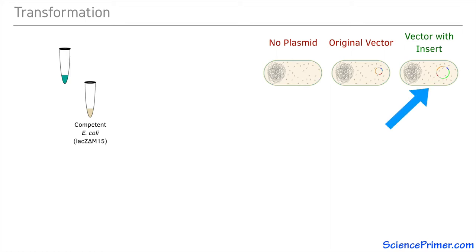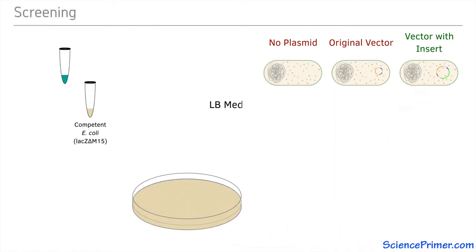The goal of blue-white screening is to isolate and identify cells that have this desired vector. To accomplish this, cells from the transformation are spread onto an agar plate. The plate contains the nutrients needed for all the cells to grow.